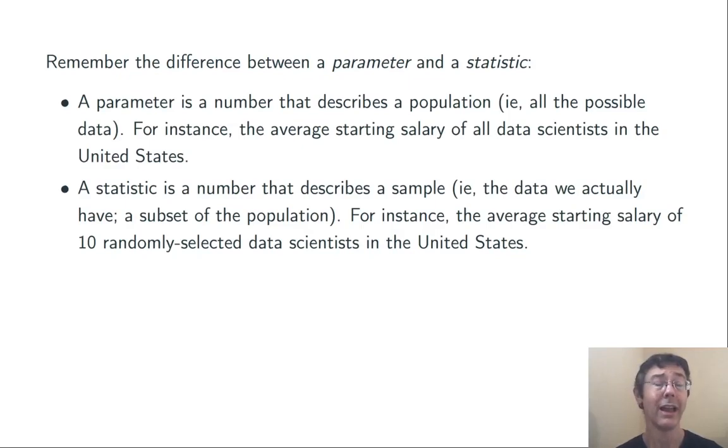Throughout this conversation, we're going to have to bear in mind the distinction between a parameter and a statistic. So let's review it really fast. A parameter is a number that describes a population, like the average starting salary of all data scientists in the United States.